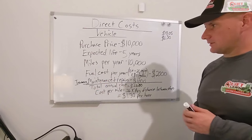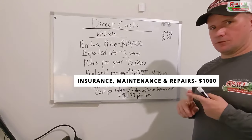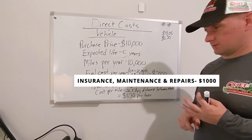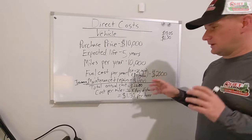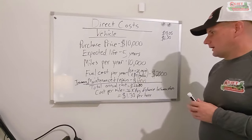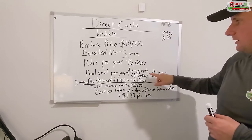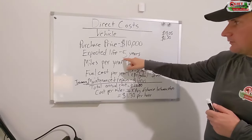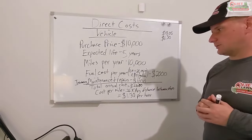We're going to throw in the other annual costs for that vehicle, which would include insurance, maintenance, oil changes, routine maintenance, repairs, changing tires, brakes — we'll assume that's $1,000. If you add up all these things, the total annual cost is $10,000 plus $2,000 plus $1,000, which is $13,000. Divide that over the expected life of five years, and that tells me that each year this vehicle is going to cost me $2,600.